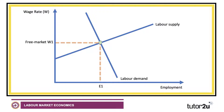You'd probably contextualise this and talk about the impact on a particular occupation — the market for people working in food processing, or people working in the market for textiles, and so on. The equilibrium wage, if left to the market, would be W1 with E1 people employed. And if you place a minimum wage in the market, to have any effect, it needs to be set above the free market wage, which I've done here.